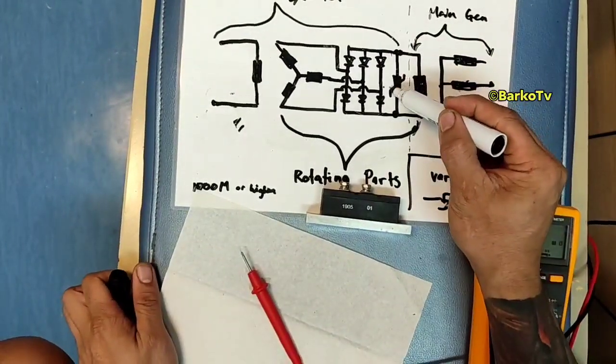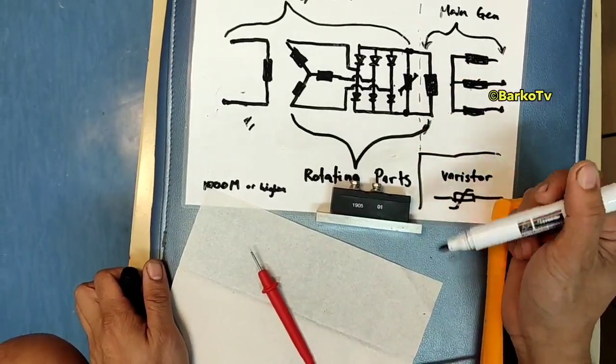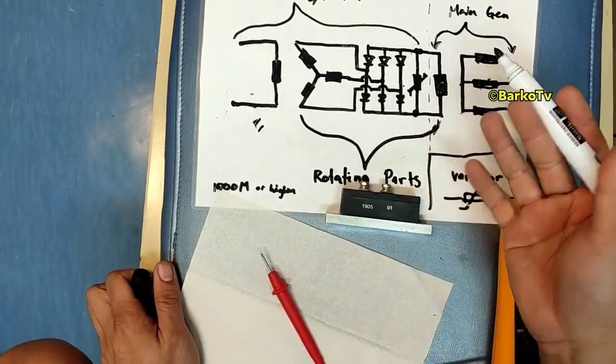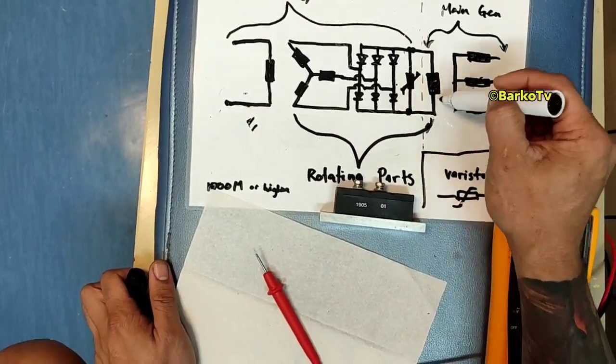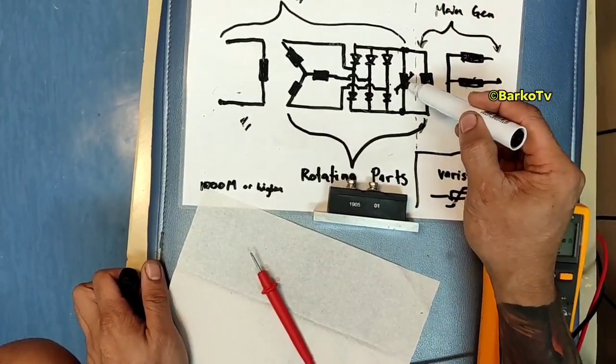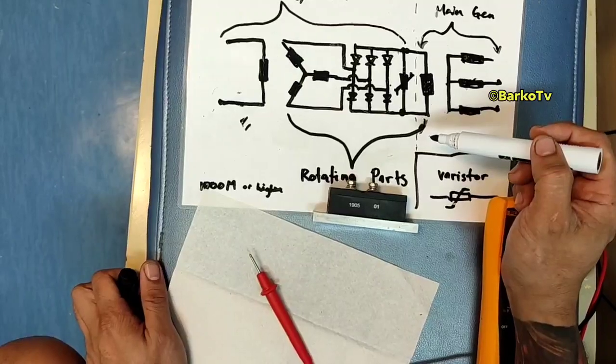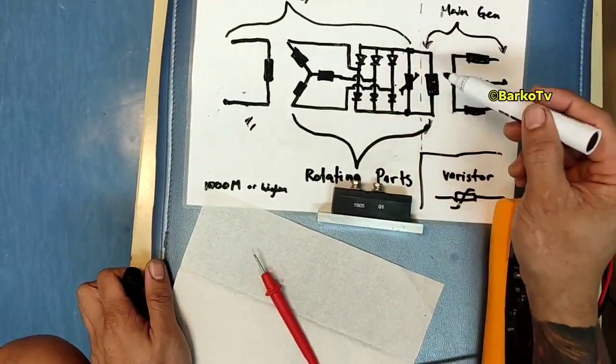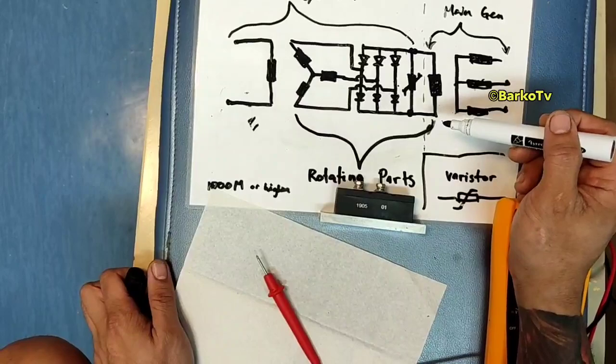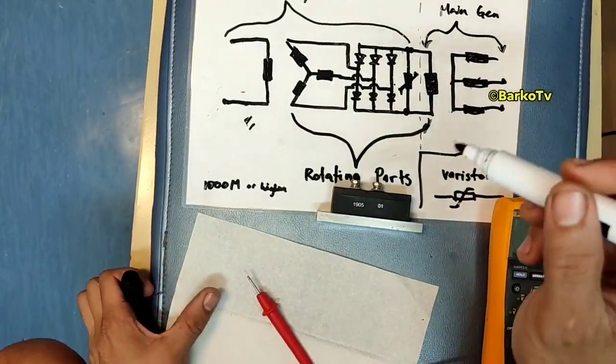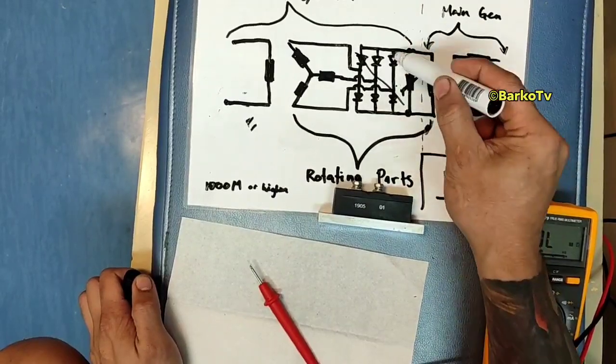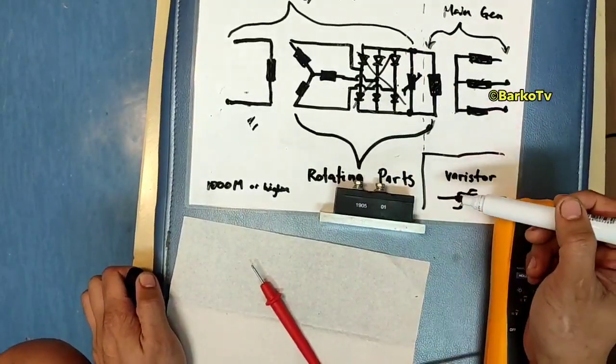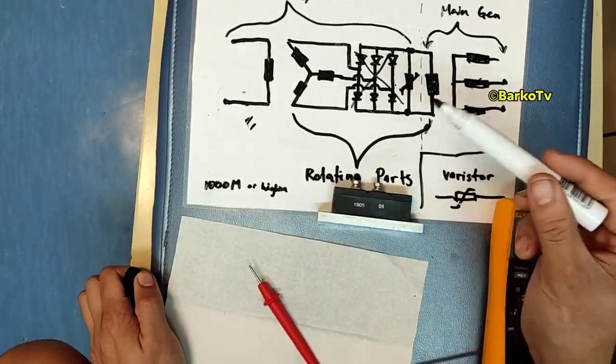How about if this varistor is open. Again, there is no problem. The diode still works, works without varistor. The problem is if you experience high transient voltage or surge voltage, this will damage your rectifier or diodes, rotating diodes.